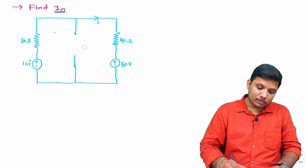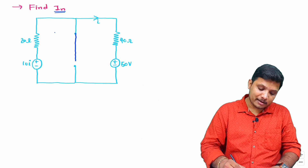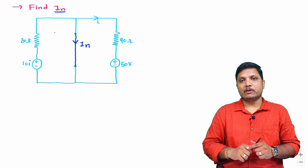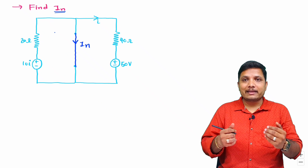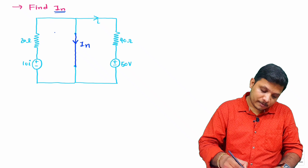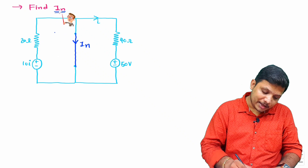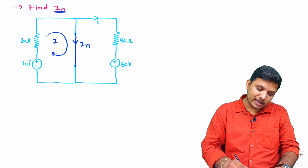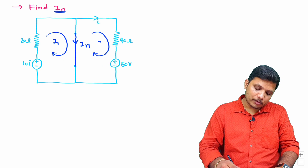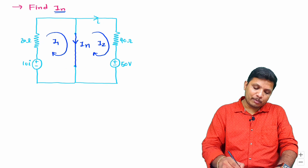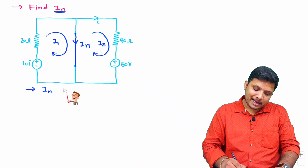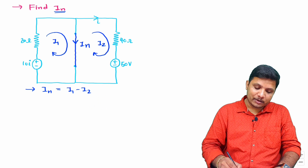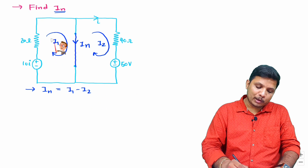We have R_L, which we replace with a short circuit. The resulting current is I_n for Norton's theorem. To calculate I_n, we take two different loops — loop one and loop two — and from these two loops: I_n equals I_1 minus I_2.